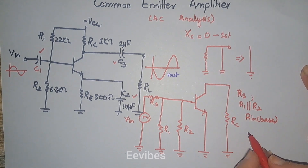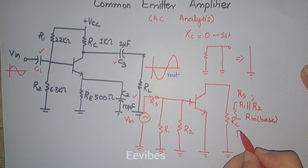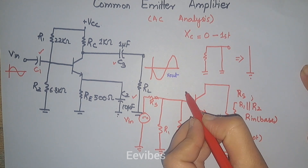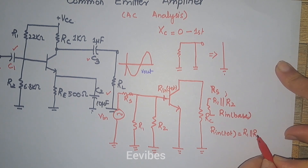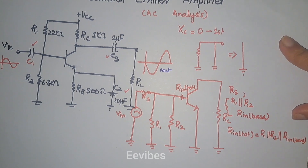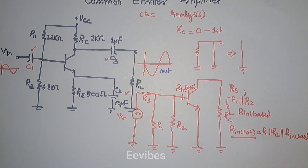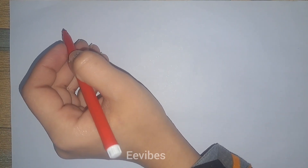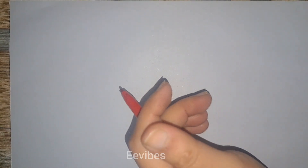The total input resistance R_in(total) is the parallel combination of R1, R2, and R_in(base) of the transistor. To develop an expression for R_in(base), we use the simplified r-parameter model of the transistor and find the input resistance looking at the base.